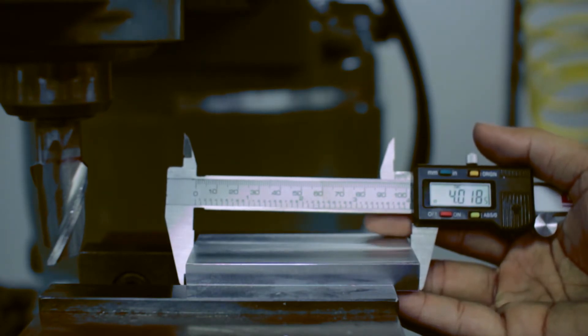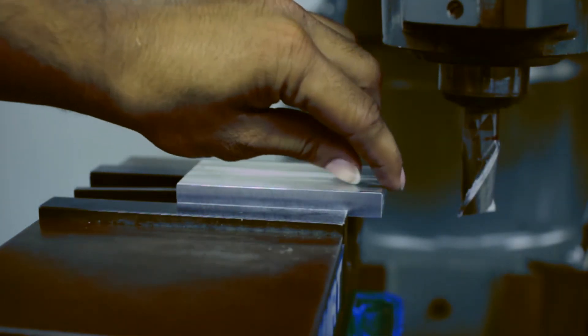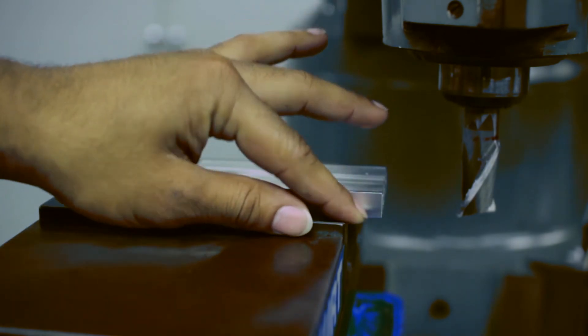We must do a radial pass to remove all of this material. Before doing this operation, make sure your part has a decent amount of overhang to prevent interference with the vise.